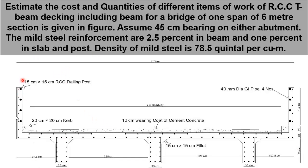Here you can see a complete cross-sectional drawing of the slab is provided. The span length is 6 metres. The overall width of the slab deck is 7.70 metres. The width of roadway is 7 metres. The thickness of the slab deck is 20 centimetres. The thickness of the T-beam is 35 centimetres. The overall depth of the T-beam is 75 centimetres. The clear span between two T-beams is 225 centimetres. At the top of each T-beam, a 15 cm by 15 cm fillet is provided.